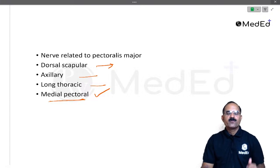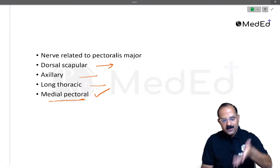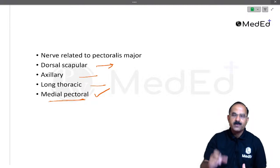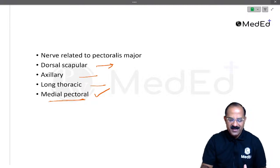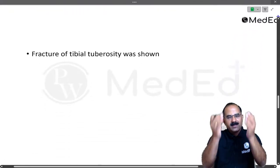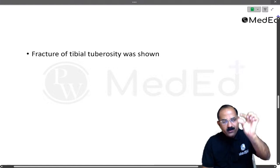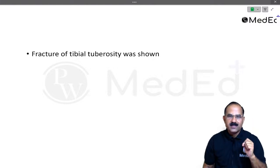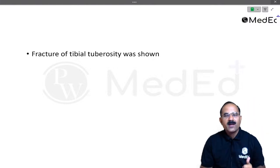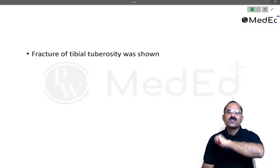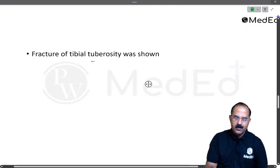The answer is the medial pectoral nerve. This was an easy MCQ, as was the previous one. Next, there was an X-ray slide showing a fracture of a part of the tibia. The bone involved was the tibial tuberosity, which is where the ligamentum patellae attaches, and the tibial tuberosity was shown as fractured. The answer is tibial tuberosity.